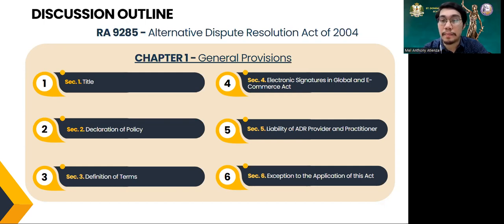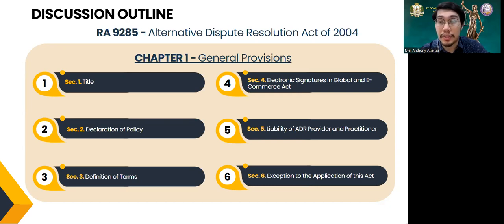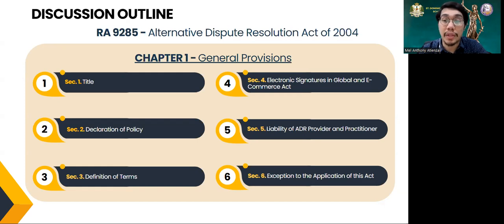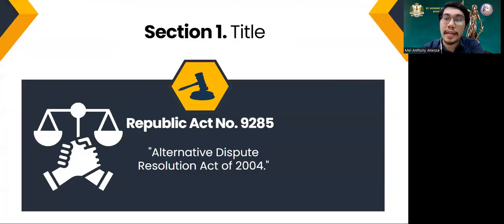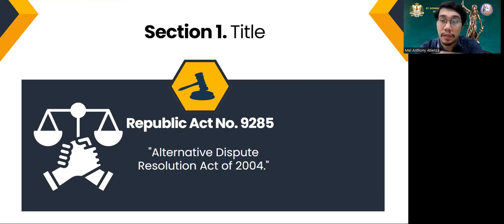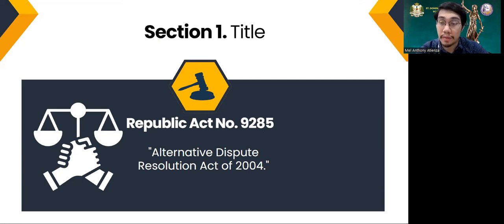Before delving into the first section, please bear with me as the coverage is quite broad, but I'll try my best to squeeze in all the topics. This introductory chapter serves as a foundation guiding our understanding throughout the subsequent discussion. It provides crucial insights that enhance our appreciation of the entire RA-9285. So let's begin with Section 1, which is the title. RA-9285 shall be known as the Alternative Dispute Resolution Act of 2004. For brevity, we'll be using ADR.